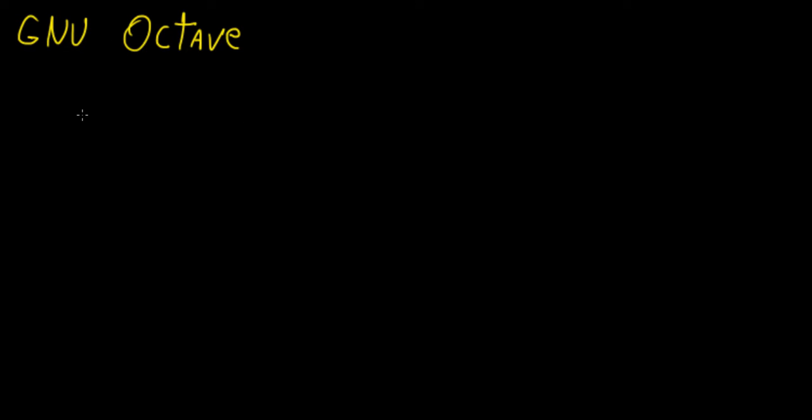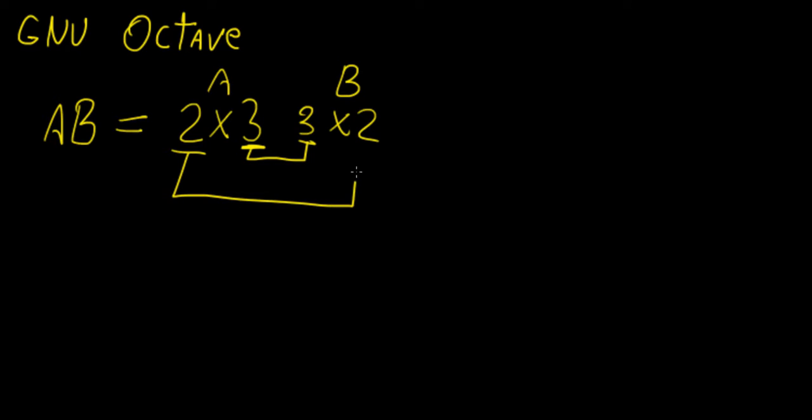So just to give you a recap of what we did in the last video, we said that we can multiply two matrices A and B so long as the dimensions match. For example, if matrix A is a 2 by 3 matrix and matrix B is a 3 by 2 matrix, then we can match the number of columns in A to the number of rows in B. If that is correct then we can multiply both matrices and the resultant matrix is going to have dimensions equal to the number of rows on A times the number of columns on B, so the resultant matrix in this case would be a 2 by 2 matrix.